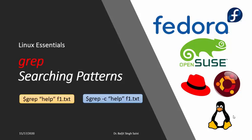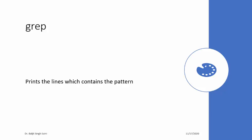Whenever you want to look for some content within a file, the grep command will print those lines which contain the specified pattern. Whatever pattern you are looking for, grep is going to print all those lines which contain that particular pattern.